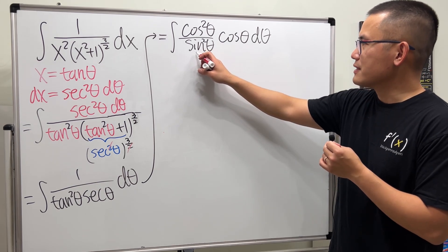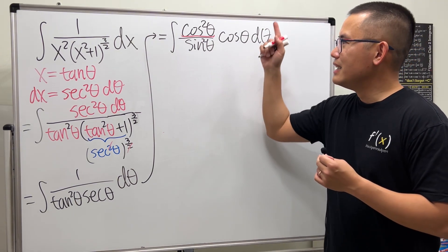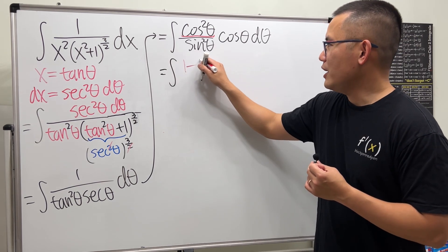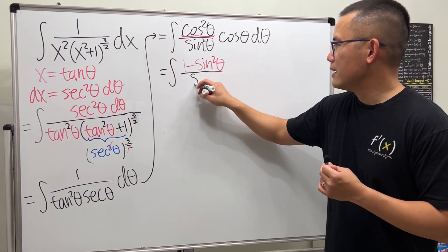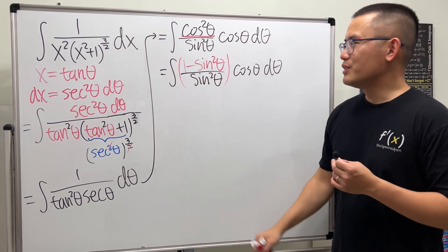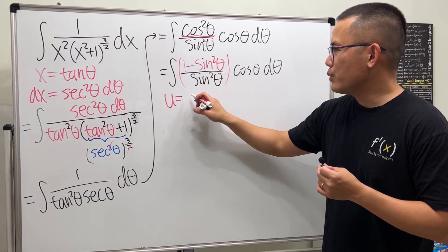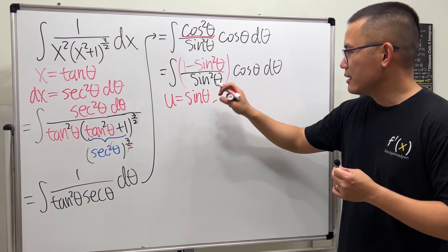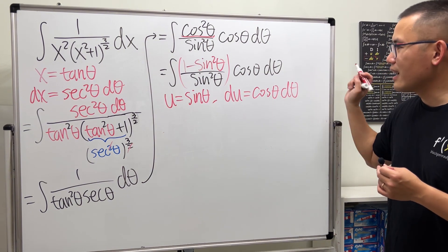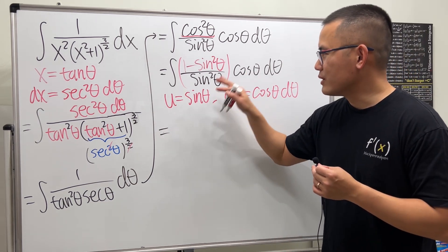On the bottom we have sine squared theta. On the top we have cosine squared theta, but we can change that to 1 minus sine squared theta. This part is just an expression in terms of sine theta. Now we can take a u-substitution: let u equal sine theta. Take the derivative both sides: du equals cosine theta d theta. We have this right here waiting for us.